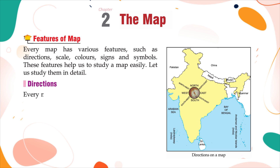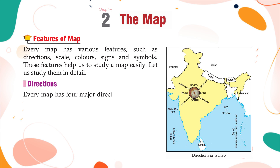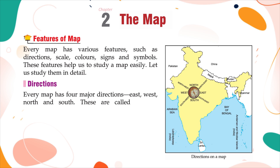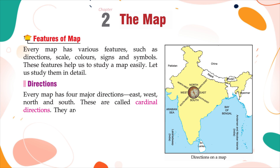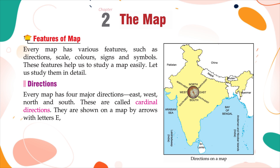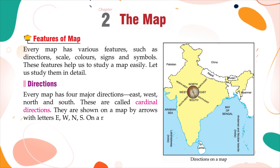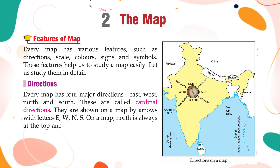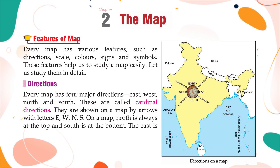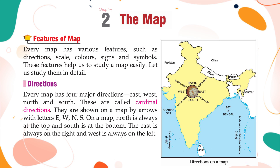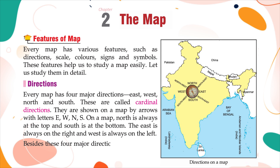Directions. Every map has four major directions: east, west, north, and south. These are called cardinal directions. They are shown on a map by arrows with letters E, W, N, S. On a map, north is always at the top and south is at the bottom. The east is always on the right and west is always on the left. Besides these four major directions, there are four sub-directions.